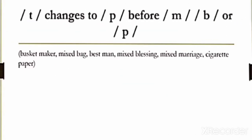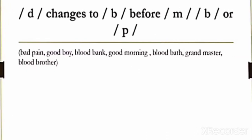So first of all, the first rule is if /n/ sound comes before /m/, /b/ or /p/ sound, it will change to /m/ sound. Next rule is if /t/ sound comes before /m/, /b/ or /p/ sound, it will change to /b/ sound.